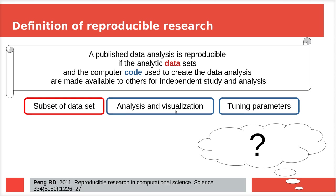Another part of the computer code are the tuning parameters. The paper mentions research using artificial intelligence and neural networks to predict breast cancer from pictures. The software did better than experts, but sadly it could not be reproduced because the tuning parameters were too sensitive. Due to the absence of documented tuning parameters, the result could not be reproduced.